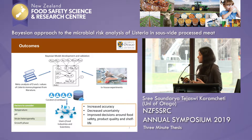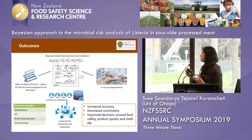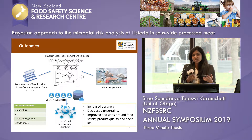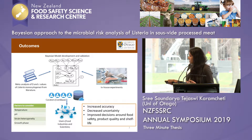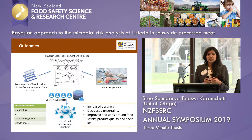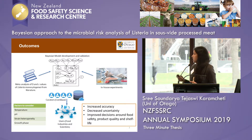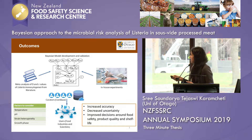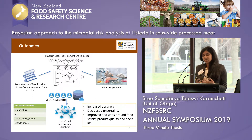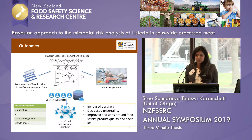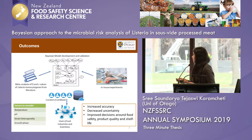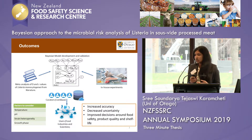For this purpose, taking Listeria as an example, we want to develop models to predict its growth and inactivation using Bayesian networks. We have collected the inactivation data for Listeria monocytogenes and have developed a Bayesian model that describes the influence of pH and temperature on its inactivation, and we are also performing in-house experiments to validate the model.